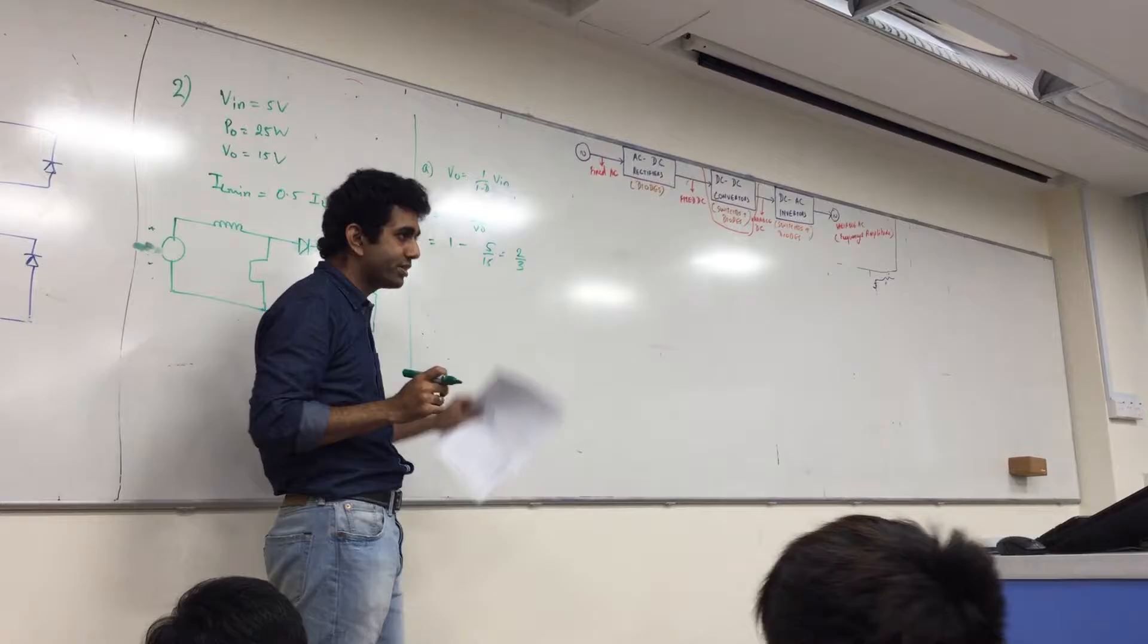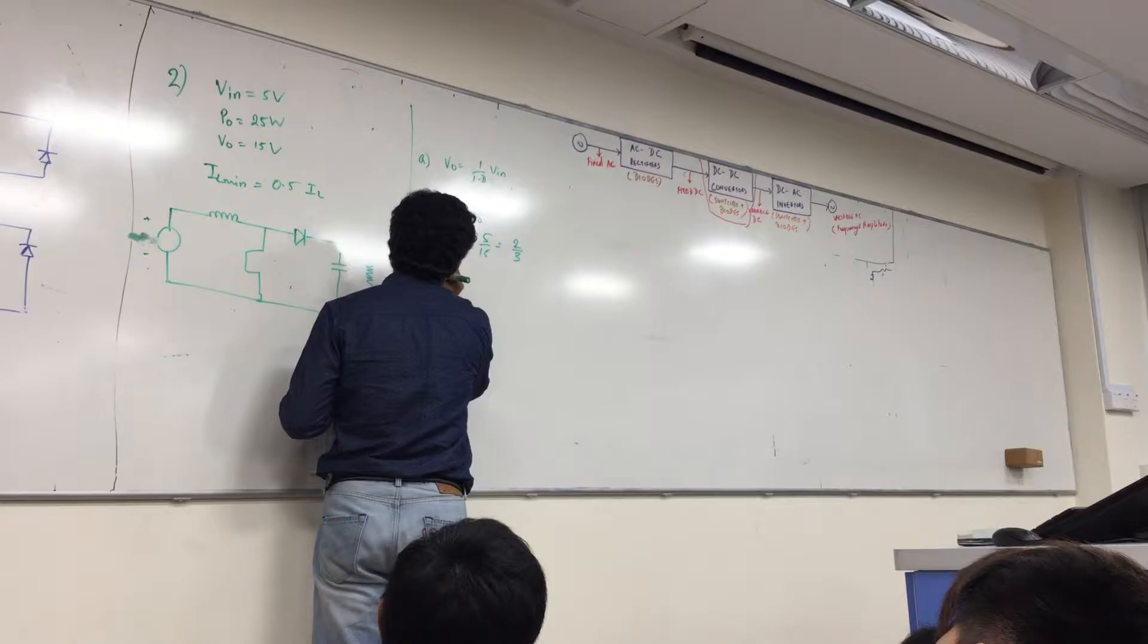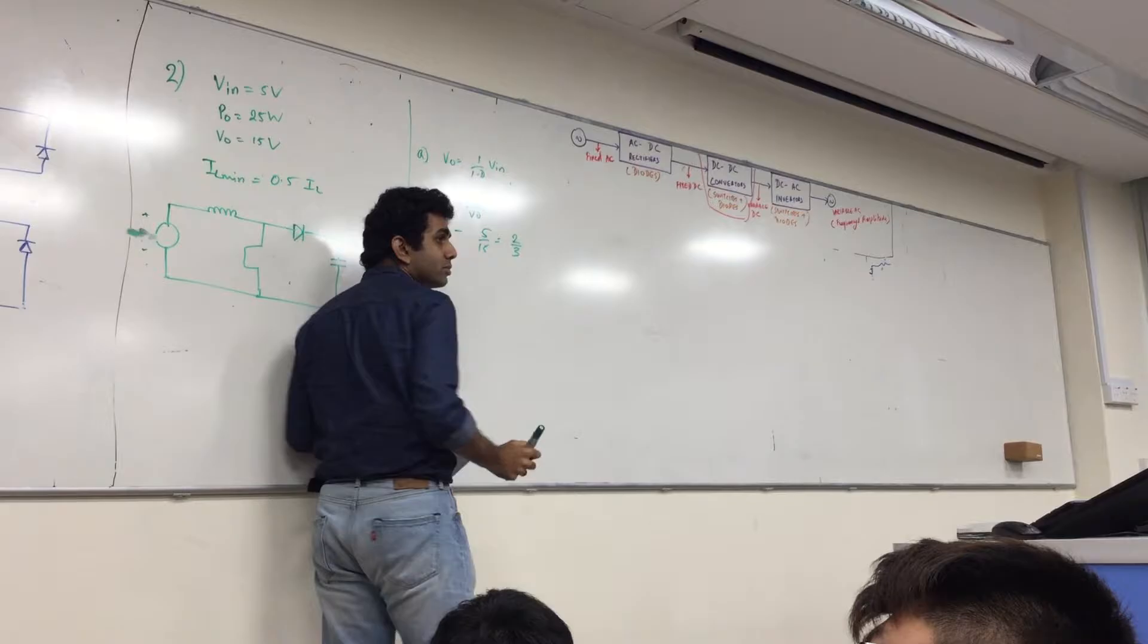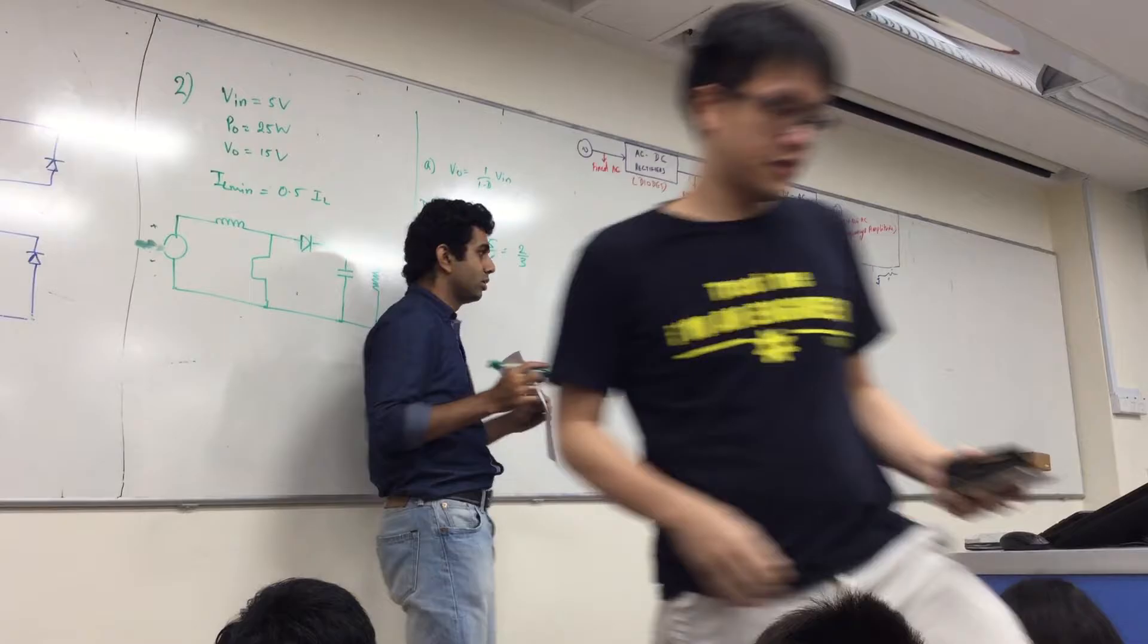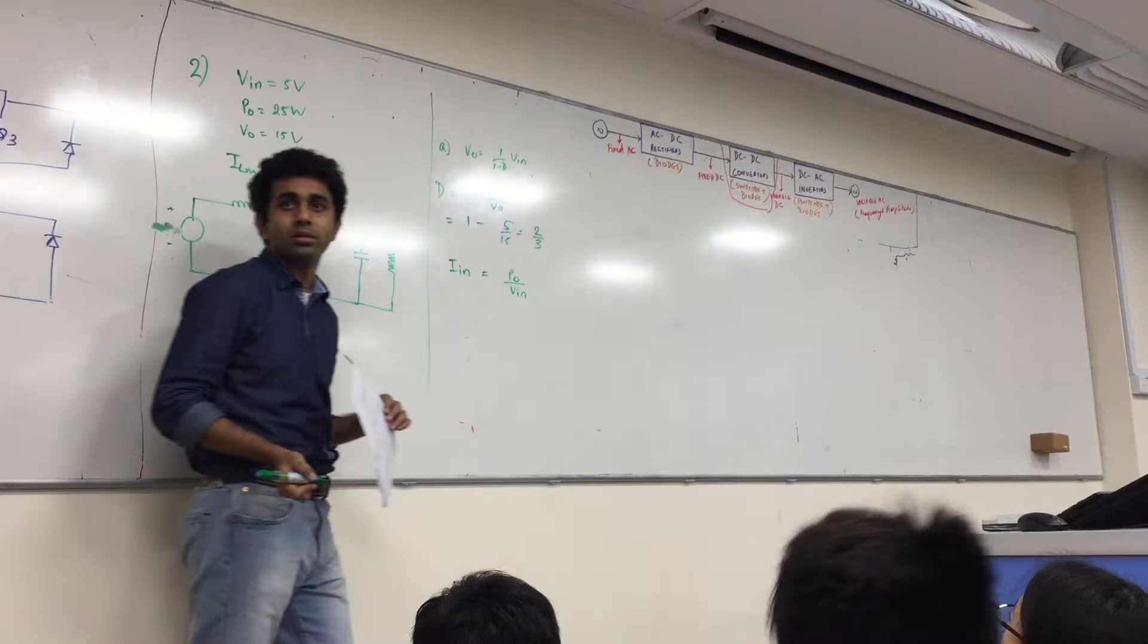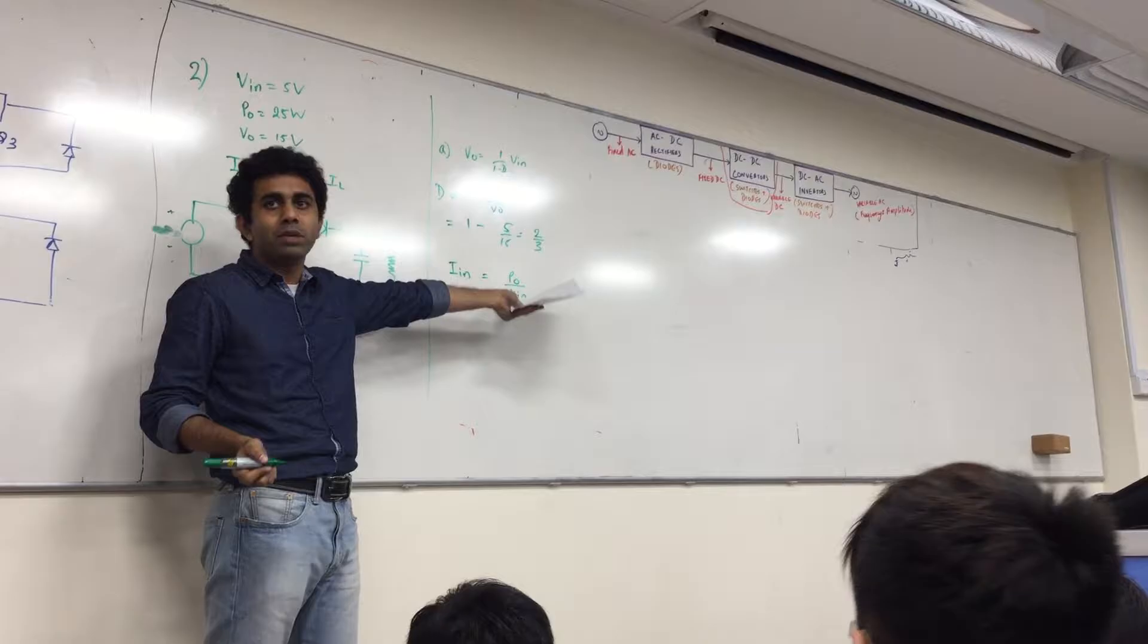So, for minimum inductance, what do you need? You need to know delta IL first, right? Basically, you need to find a formula which has L in it. And relate to whatever is given to us. We already know what is the duty cycle here. I know, I don't know what is the input current. Can I find out the input current here?